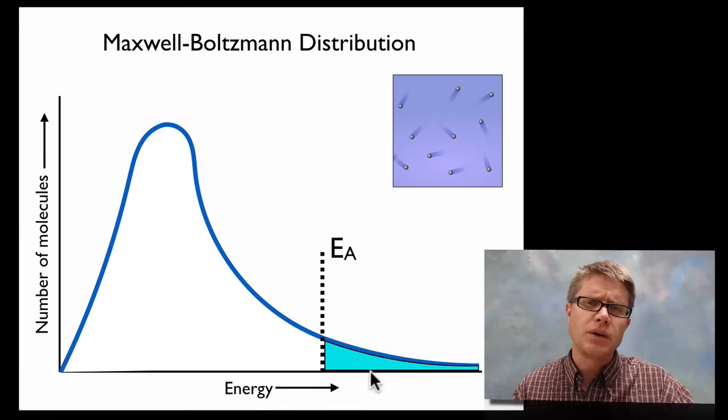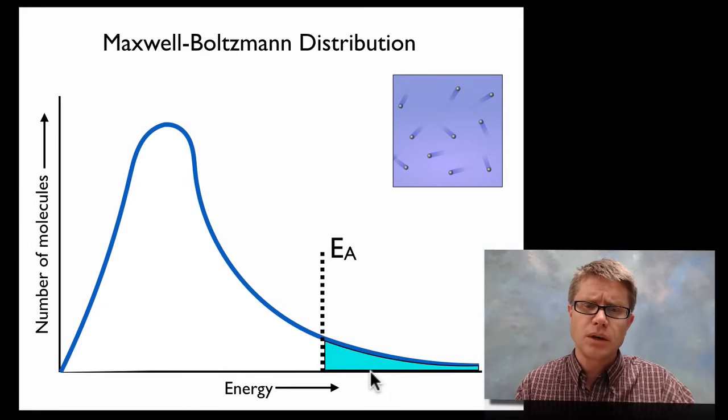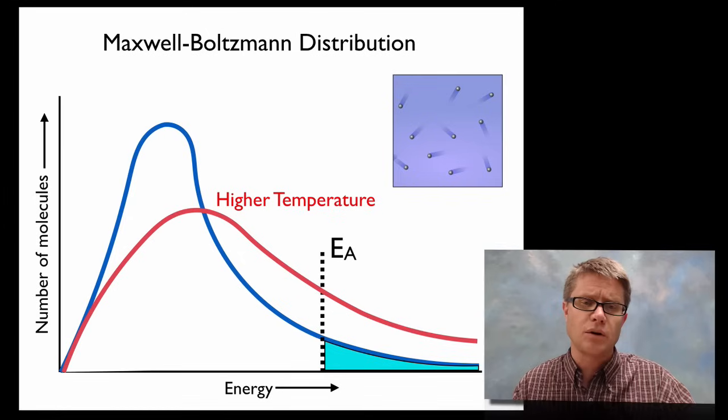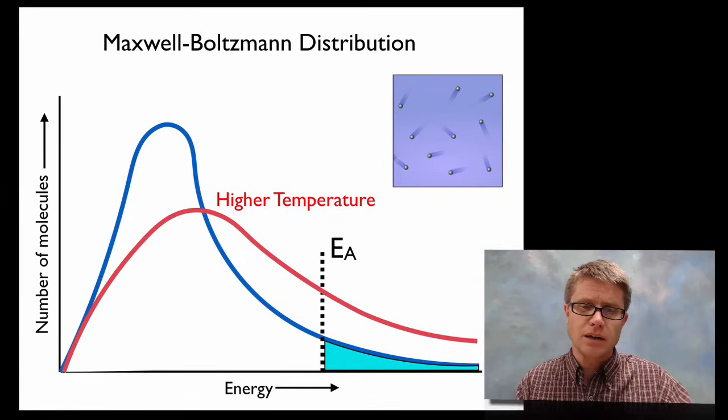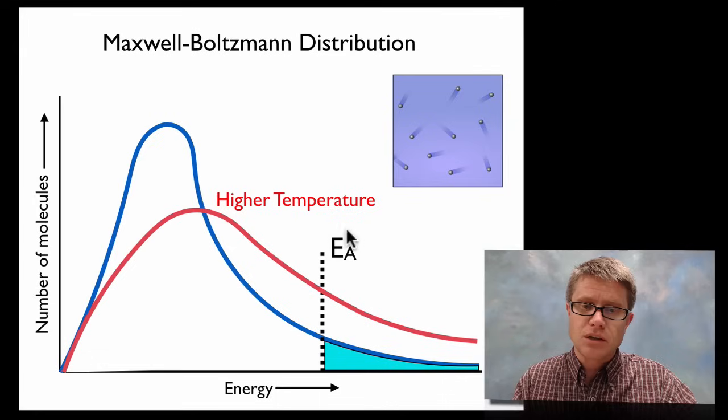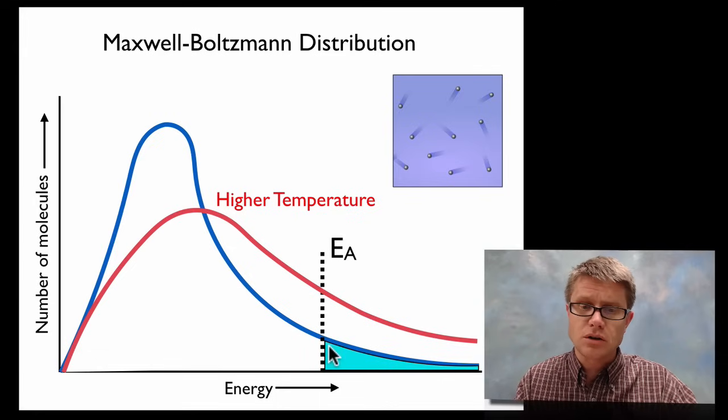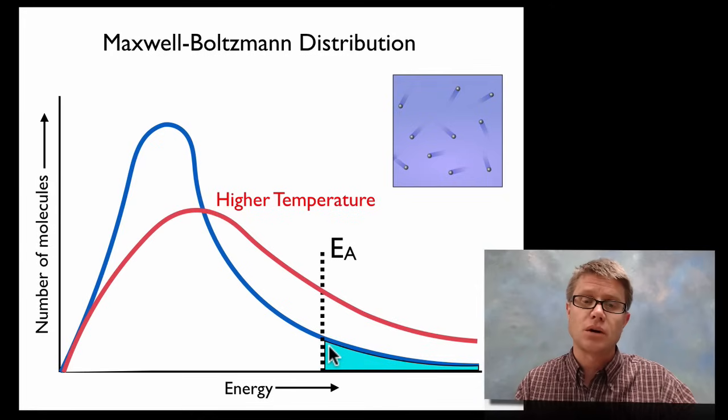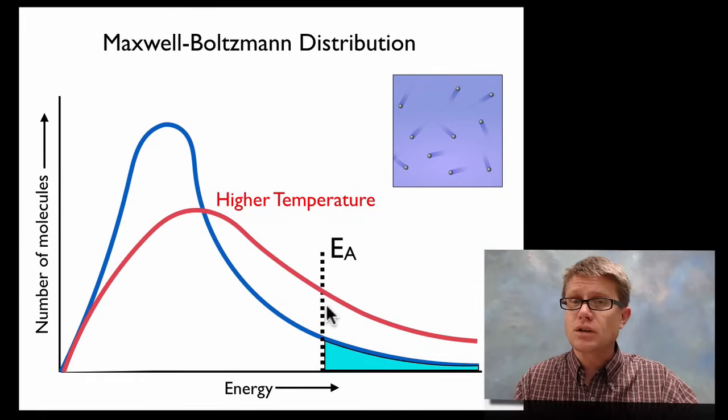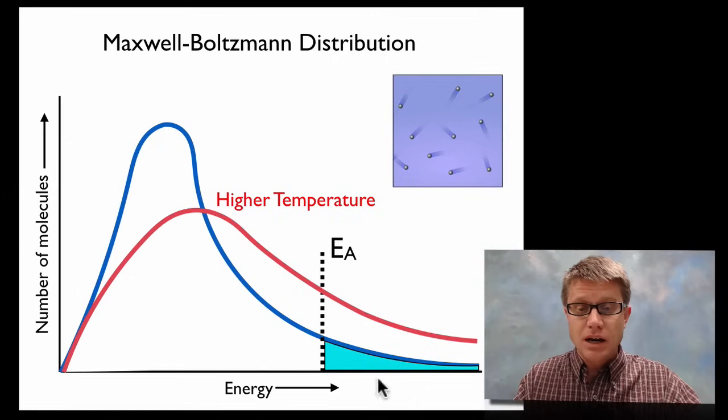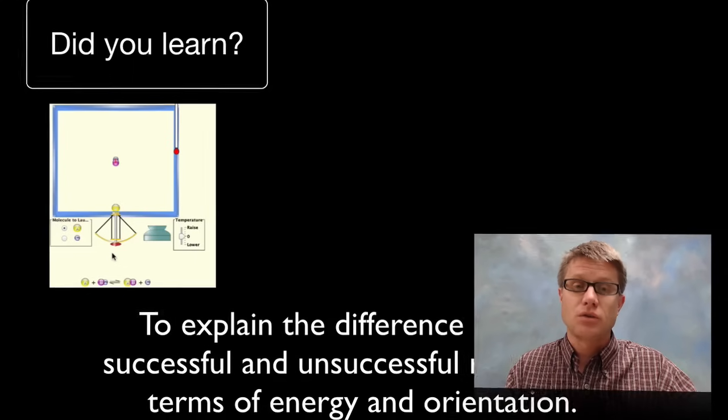And so what happens if we increase the temperature? Well, if we increase the temperature, we just get a different curve. It's going to be the same number of particles, but it's shifting everything to the right. Notice what happened to the activation energy. The activation energy still is the same—it still requires a certain amount of energy for that reaction to occur. But by shifting it to higher temperature, we have more particles that have more energy, and so that area out here is going to be greater.